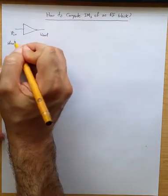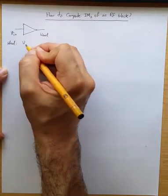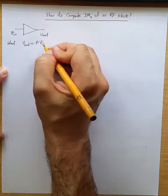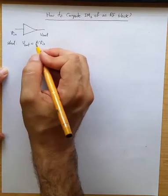Ideally what we want from this block is we get V_out, the voltage gain A times V_in. You can also translate this to power relationship with a squared.